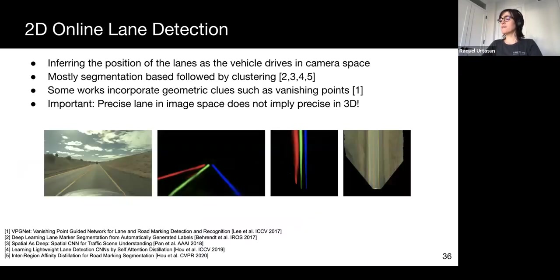Also, we require the inferred lanes to eventually reside in 3D, as this is the space in which the SDV really operates. There are many works that detect the lanes in the camera space. They typically use deep learning to segment the lane boundary pixels, followed by clustering the pixels belonging to individual lanes, and then fitting a spline to each cluster. Some other works incorporate geometric cues, for example, vanishing points, in order to embed geometric context in the network. However, I would like to stress the important fact that doing precise lane detection in 2D does not imply precise lanes in 3D, which is the space we really care about.